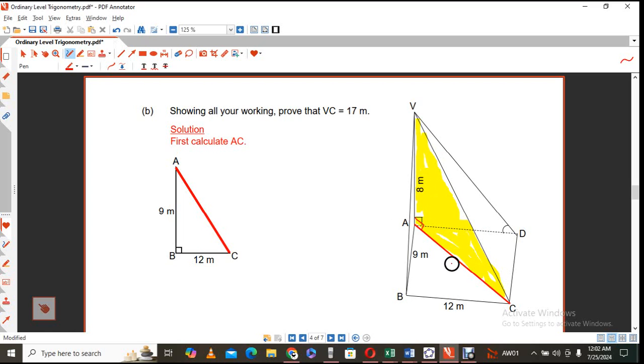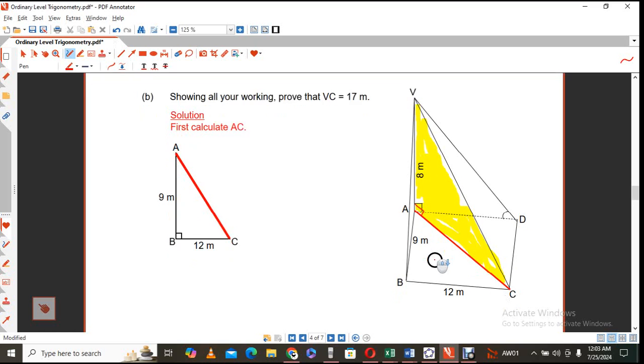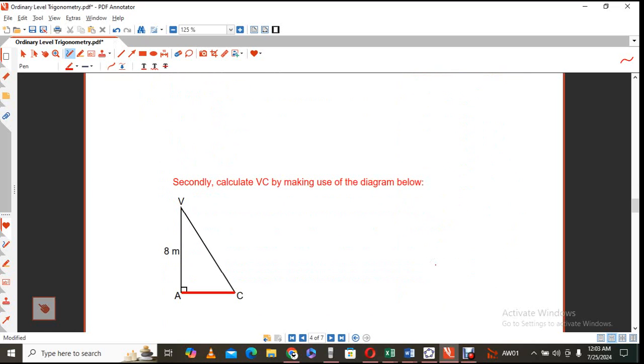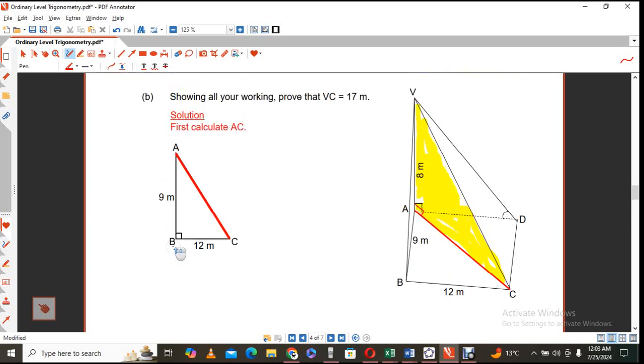So that triangle, we are now supposed to prove what VC is. So since it's a right angle triangle, we need to be able to calculate the distance. First, the one that I indicated in red. And once we know the one in red, then we can use that triangle VAC, as I've indicated, in order for us to calculate that particular distance or to show what that distance is. So first, we're going to do the one in red, which is the one, think of it as the one that is at the bottom here, triangle A, B, C. So again, I'm looking for AC and AC square is equal to 9 square plus 12 square.